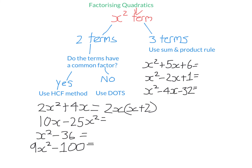Let's look at this next one: 10X minus 25X squared. Two terms again. Do they have a common factor? Yes — they both have an X, and they also have a common factor of 5. So we use highest common factor method. The highest number going into 10 and 25 is 5, and they both have an X. What do I times by 5X to get 10X? That's just 2. What do you times by 5X to get negative 25X squared? Negative 5X. If I expand this, I get the original expression.